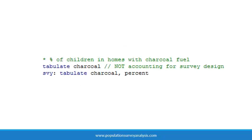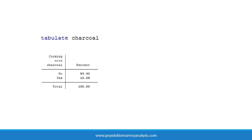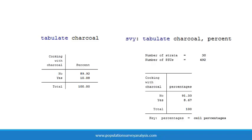After we have specified the survey design, we tell Stata to account for this survey design in any subsequent analyses by inserting svy colon before the rest of the command. For example, to estimate the percent of children whose families cook with charcoal not accounting for the survey design, we would write tabulate charcoal. To perform the same analysis accounting for survey design, we would write svy colon tabulate charcoal.